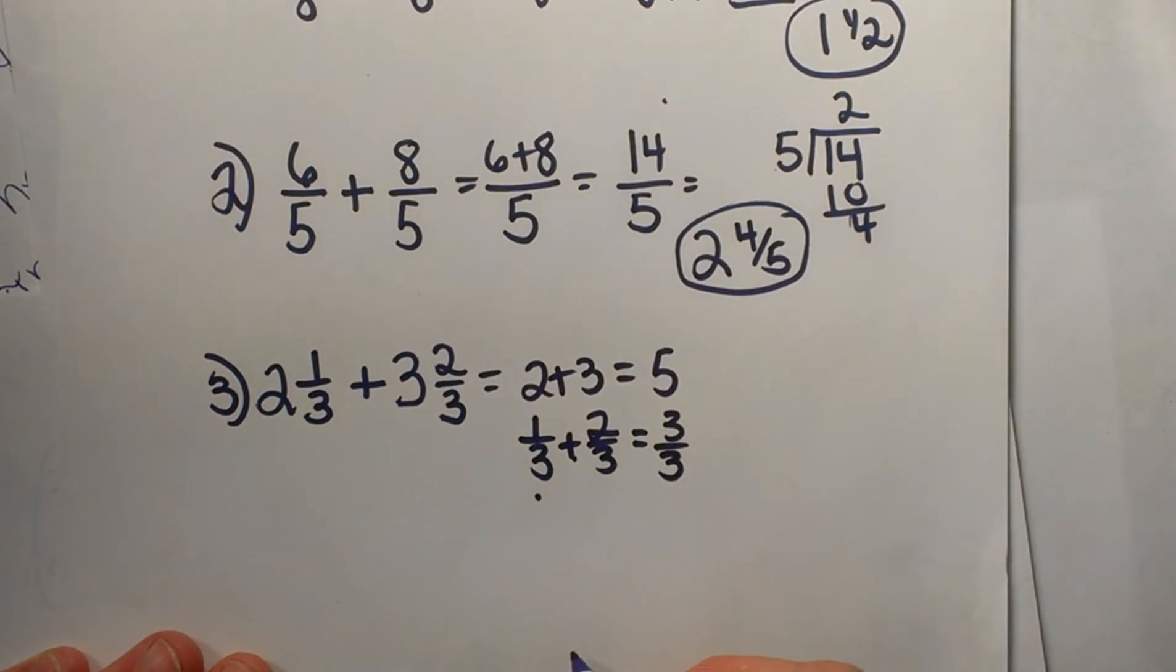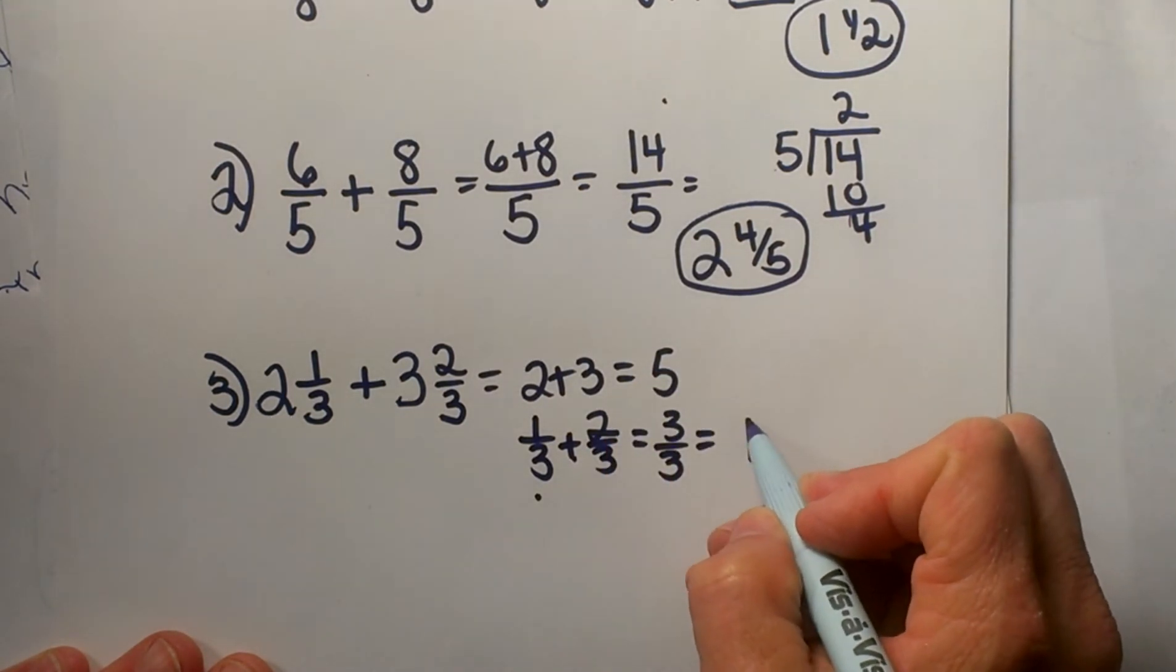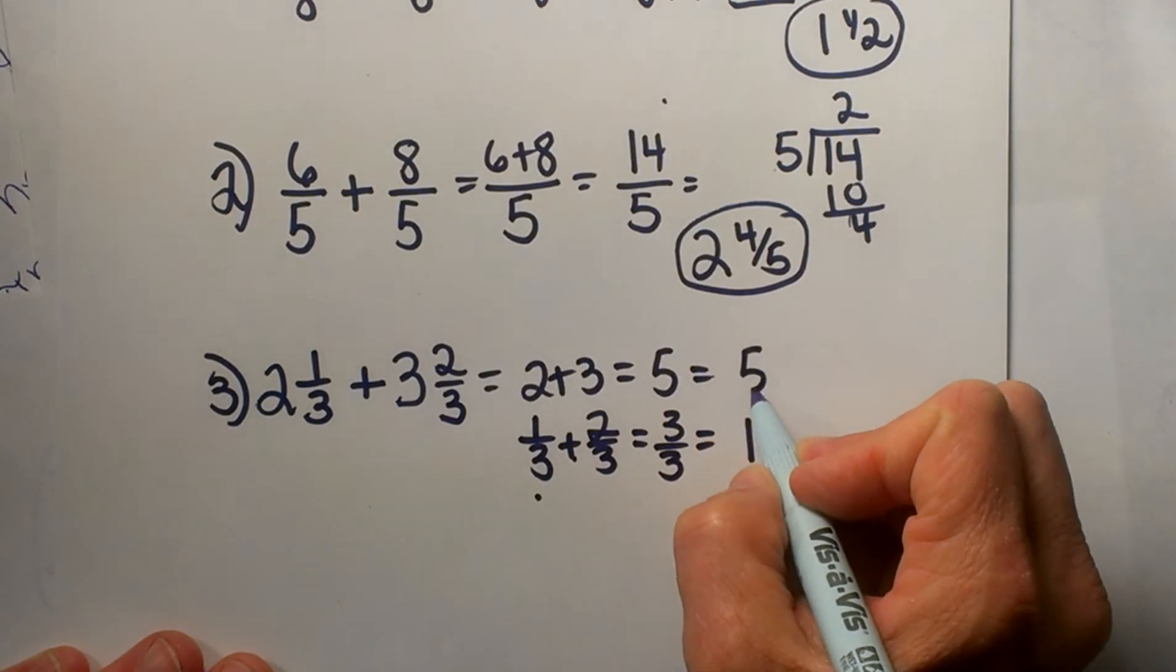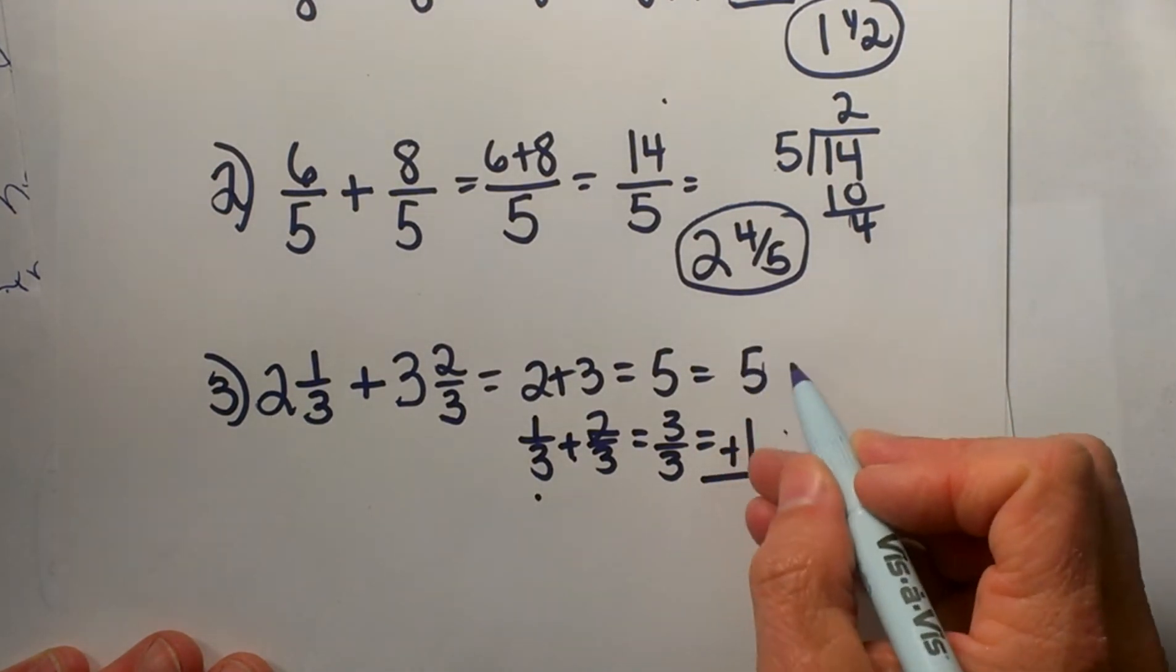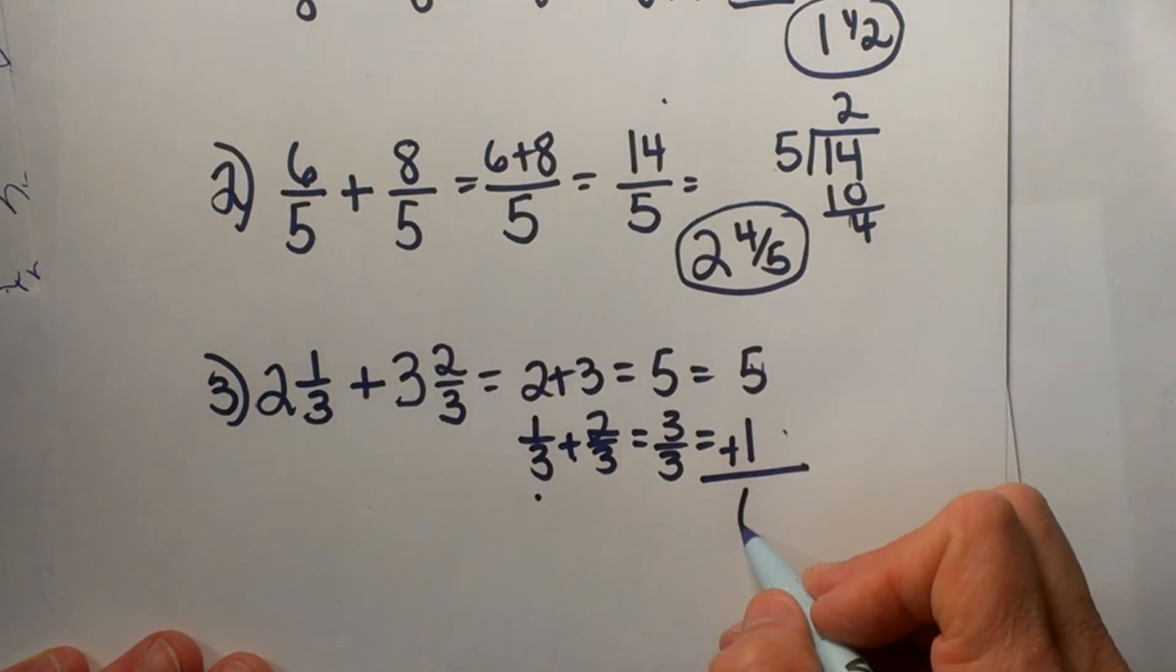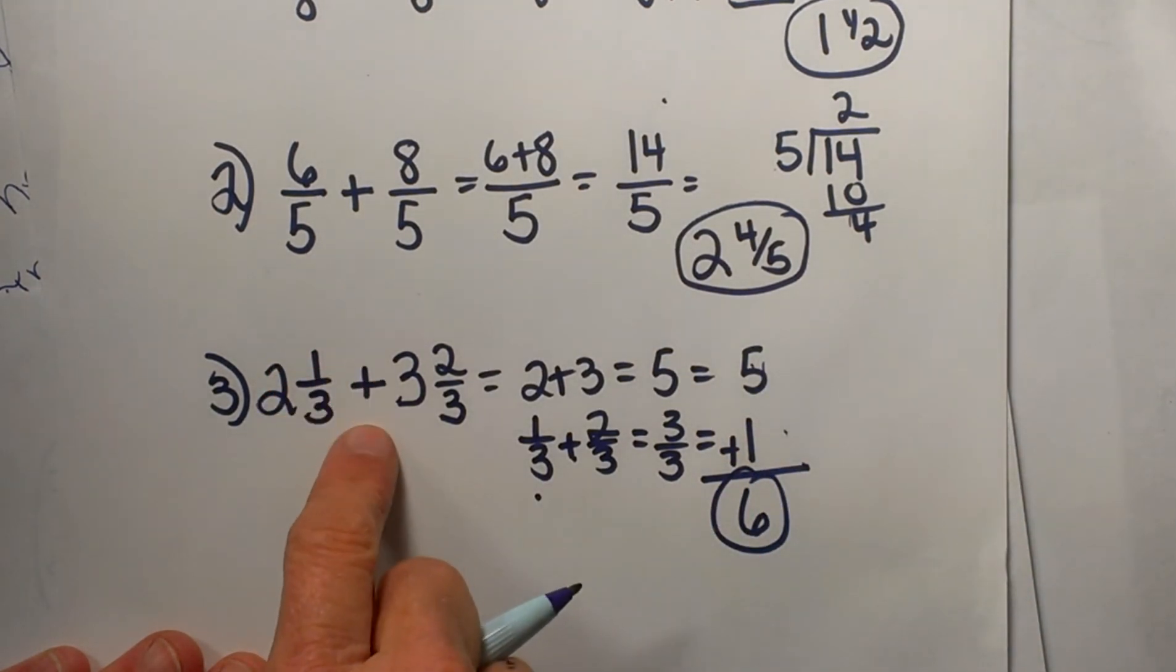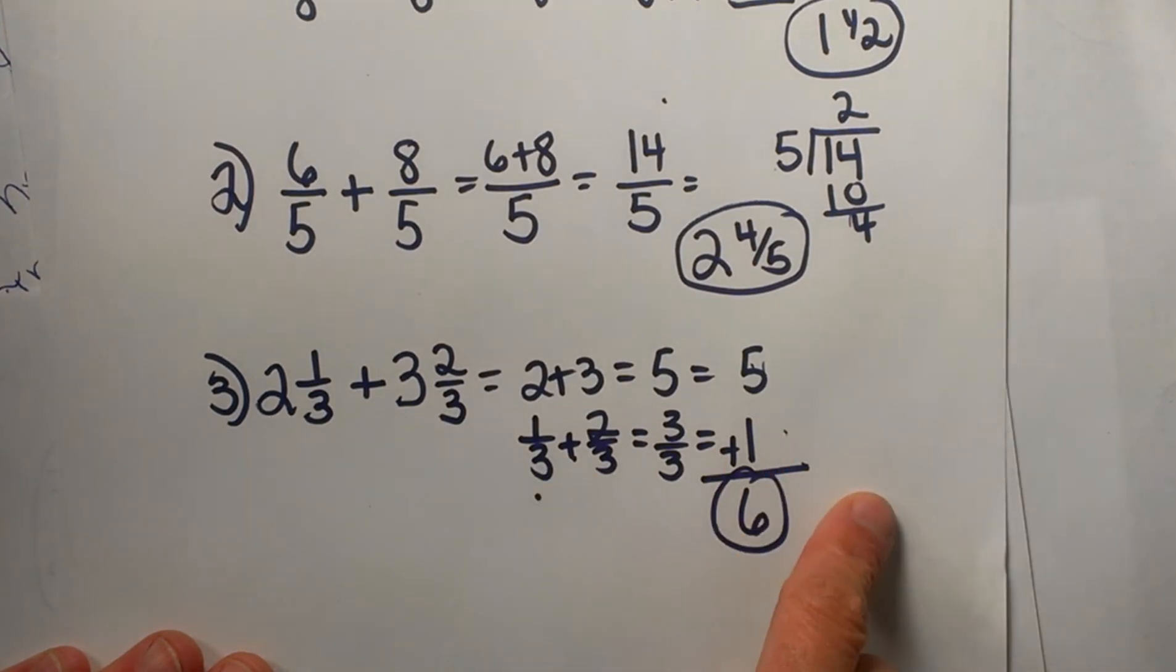Well 3/3, that just simplifies to the whole number 1. So I'm going to take 5 and add to it my fraction. Well my fraction ended up just being a whole number, so 5 plus 1 is 6. So that is what 2 and 1/3 plus 3 and 2/3 adds up to.